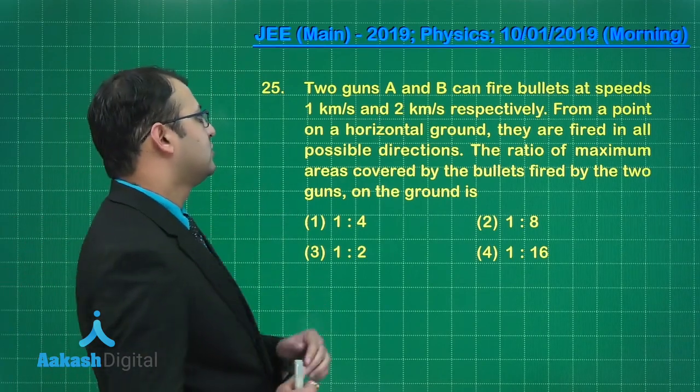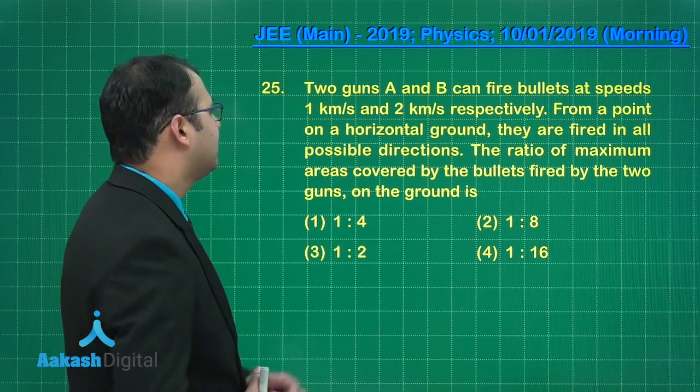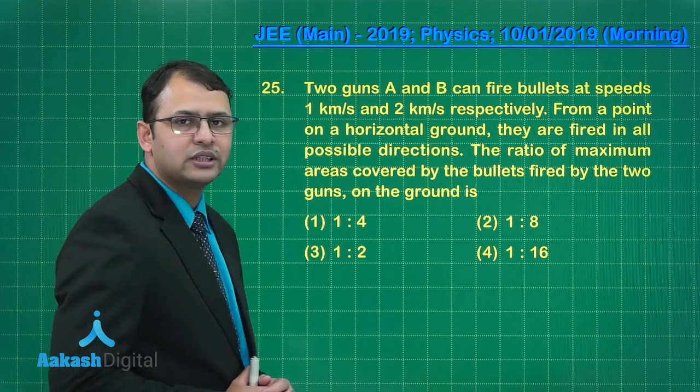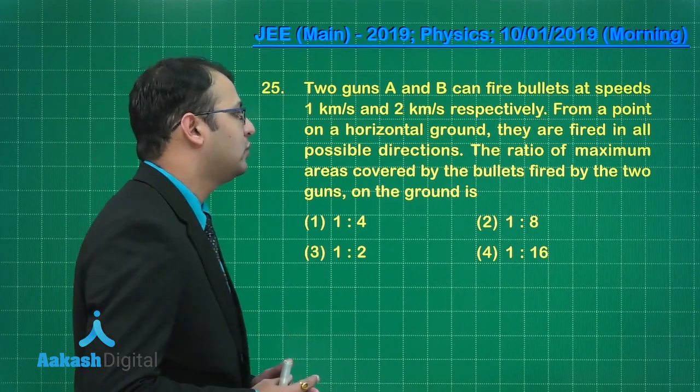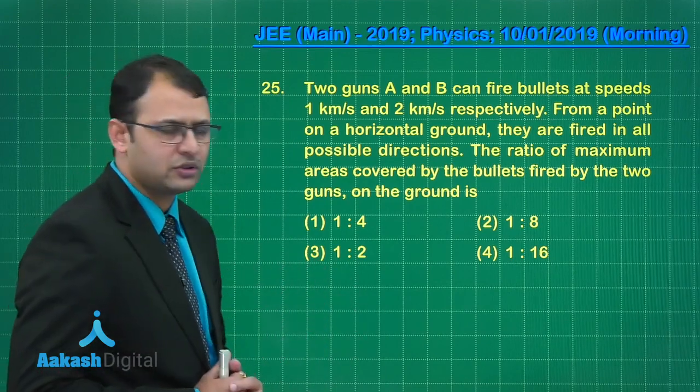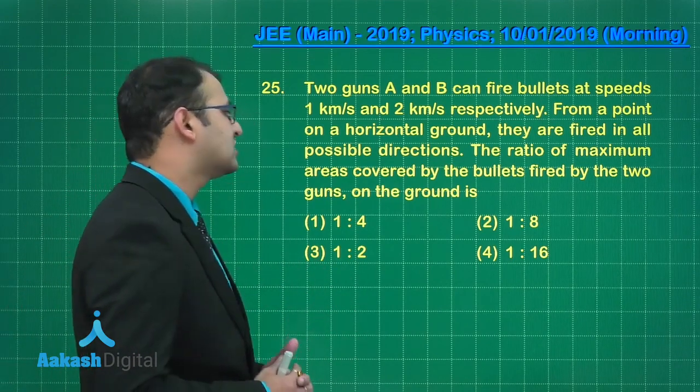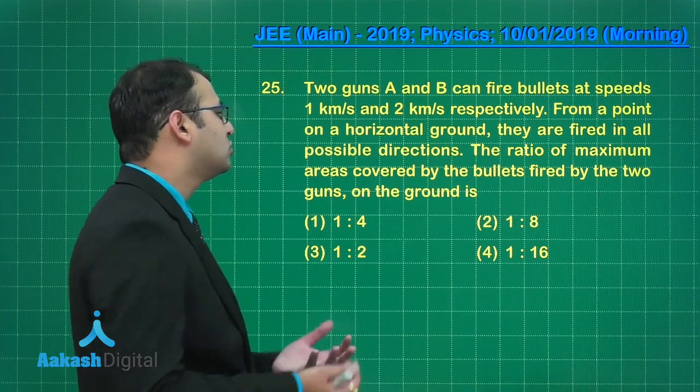There are bullets which can be fired from guns A and B with muzzle velocity 1 km per second and 2 km per second respectively. From a point on horizontal ground they are fired in all possible directions. The ratio of maximum areas covered by the bullets fired by the two guns on the ground is...